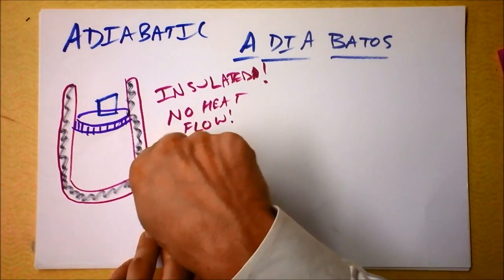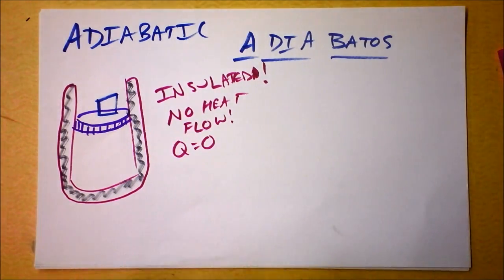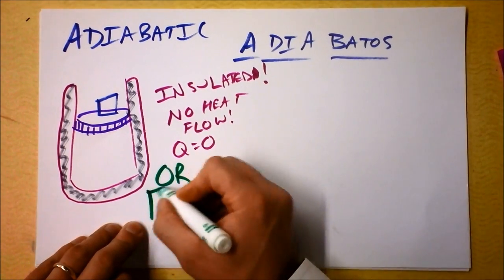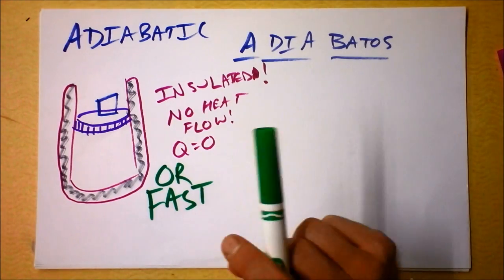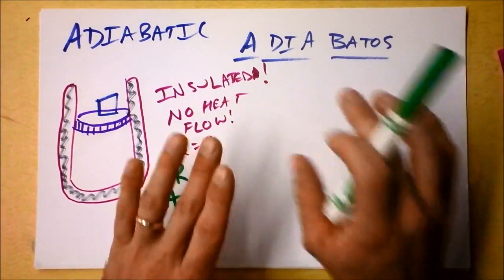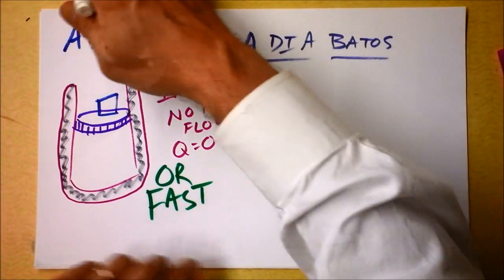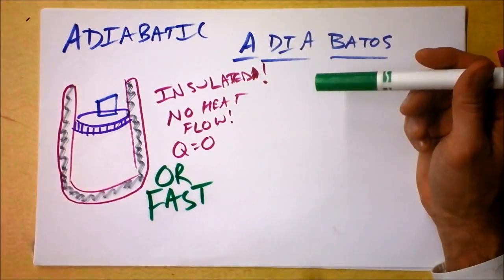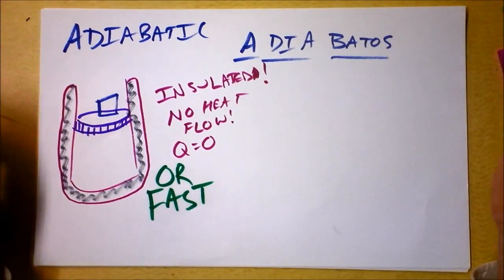Practically speaking though, we don't even have to insulate it. What if we do it really, really, really fast? This is a bit of a contradiction with our reversible claim that things had to be done so slowly that they can be done backwards each step and get back to where you were. But practically speaking, we can have fast things happen.